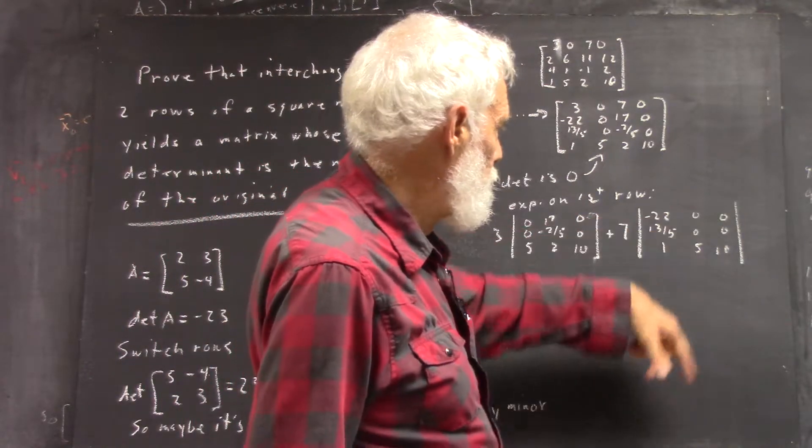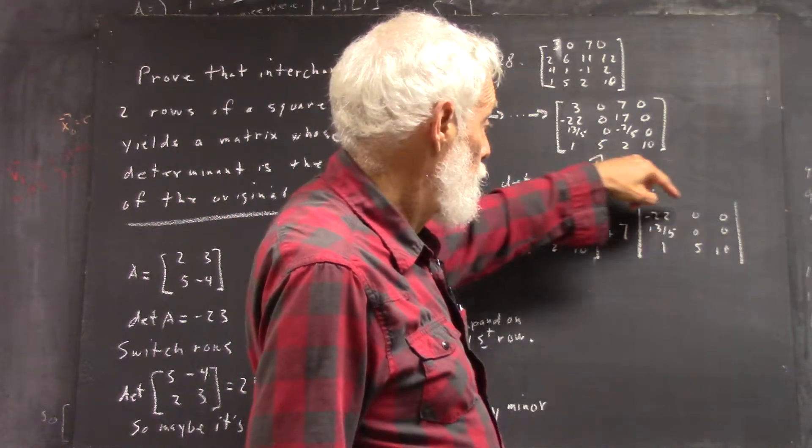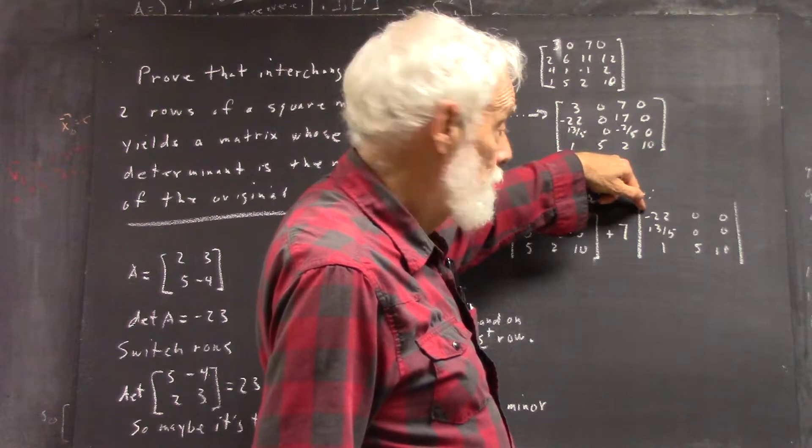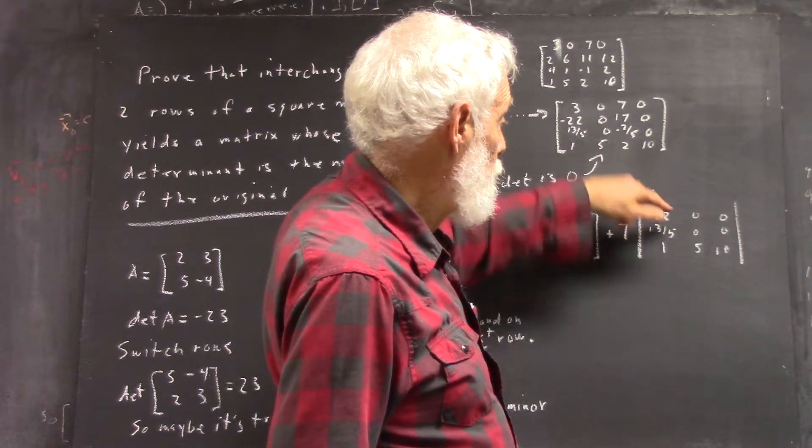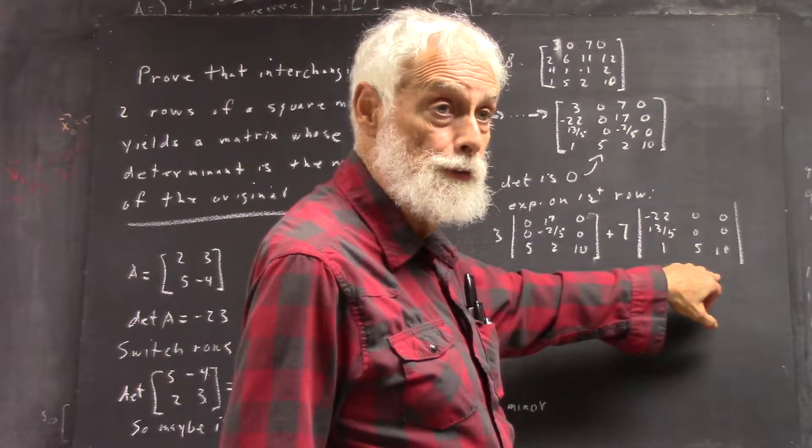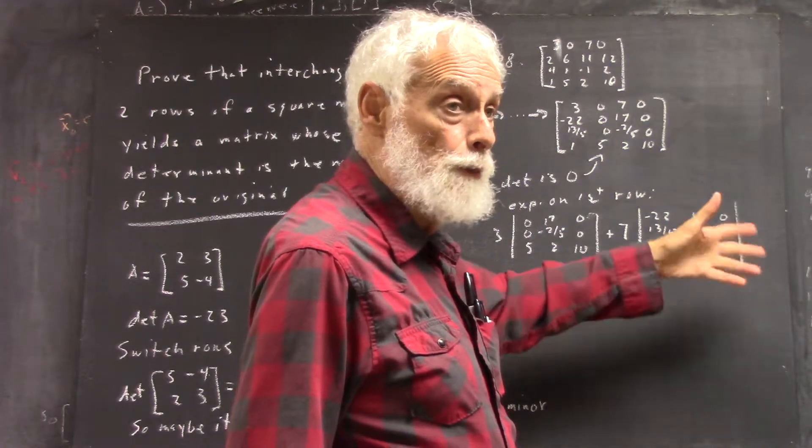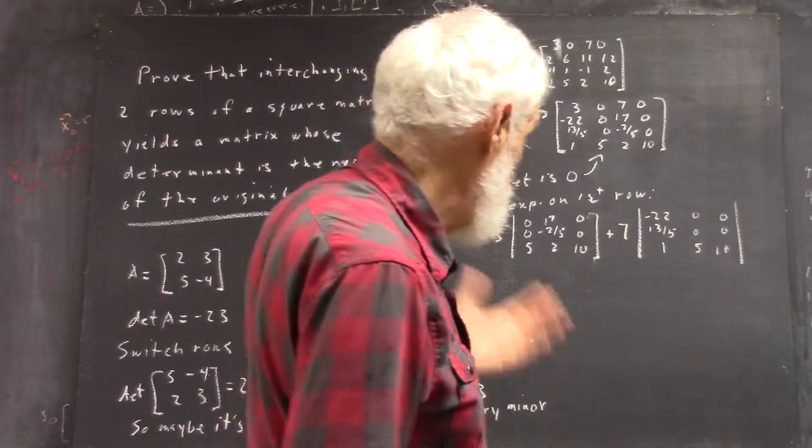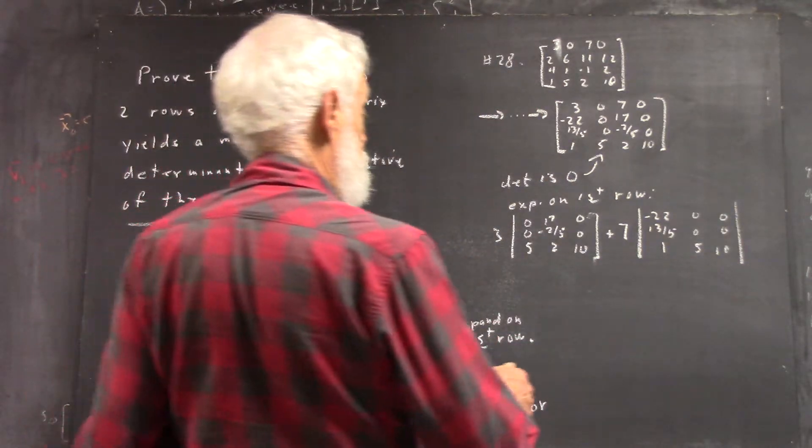And here, if I expand on this row, again, the only minor that doesn't have a zero on it will be this one, which has zeros here, which has determinant zero, right? There are other ways to see it. The first time I looked at it, I saw it a different way.